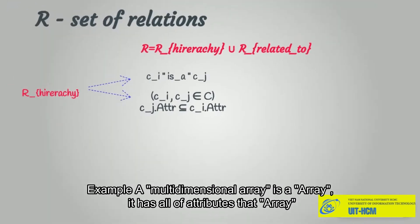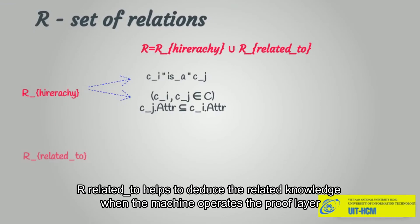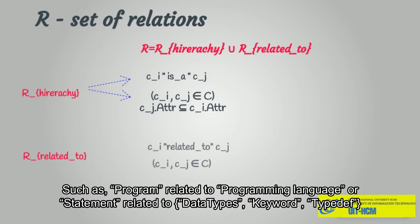Example: a multi-dimensional array is an array. It has all the attributes that array has. Related-to helps deduce related knowledge when the machine operates the proof layer, such as program related to programming language, or statement related to data types, keyword, typedef.